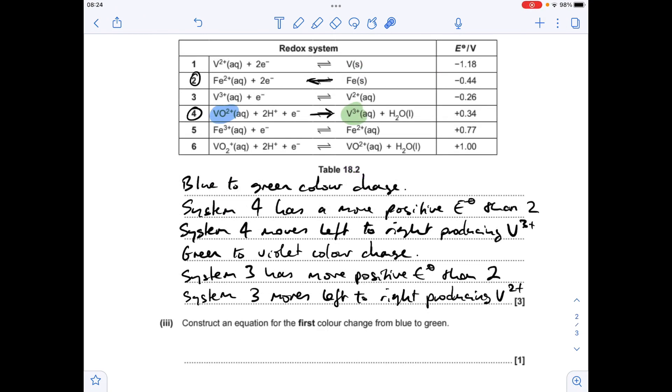And finally we've just got to write the equation for this color change, blue to green. So system 4, remember, goes in the forwards direction because it's got the more positive standard electrode potential. System 2 goes backwards. So all we've got to do is look at the electrons. So you can see we've only got one electron here but we've got two there. So we're going to double system 4 and add it to system 2. Which gives that equation there.